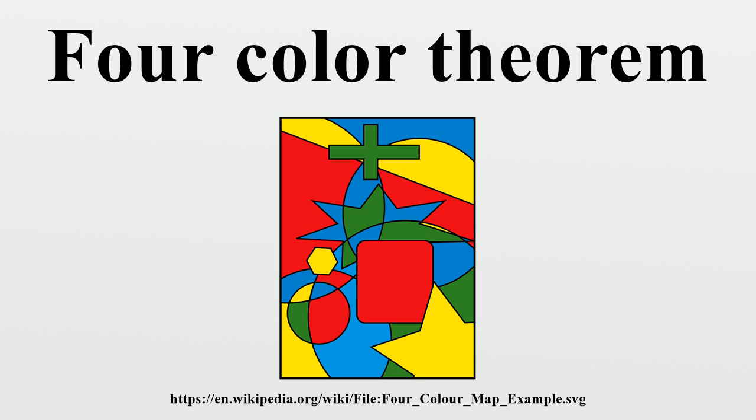Tait, in 1880, showed that the four-color theorem is equivalent to the statement that a certain type of graph must be non-planar. In 1943, Hugo Hadwiger formulated the Hadwiger conjecture, a far-reaching generalization of the four-color problem that still remains unsolved.